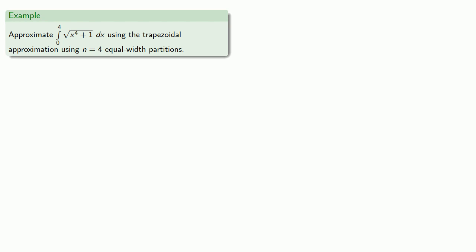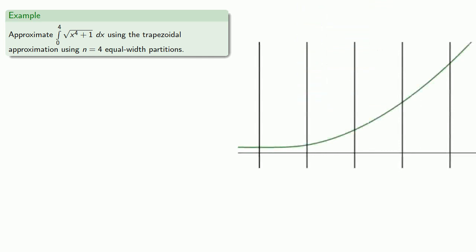And so we can approximate this definite integral using the trapezoidal approximation with n equals 4 equal width partitions. So with n equals 4 partitions, the interval between 0 and 4 will have the partition points x equals 0, 1, 2, 3, and 4.